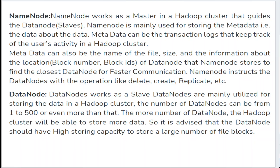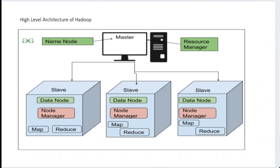DataNodes are responsible for storing the actual data, whereas NameNodes are responsible for storing only the metadata. That's why the NameNode is called the master node and the DataNode is called the slave node. You can keep more slave nodes, but that information must be tracked in the NameNode.